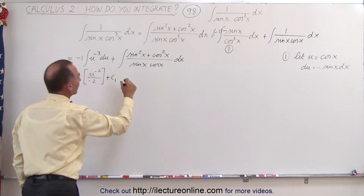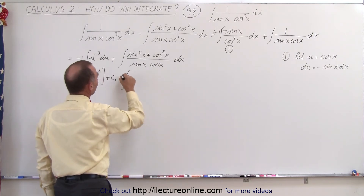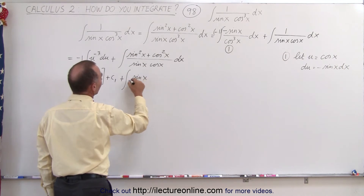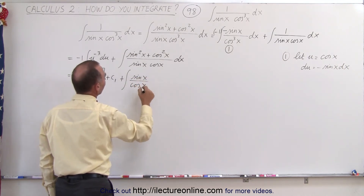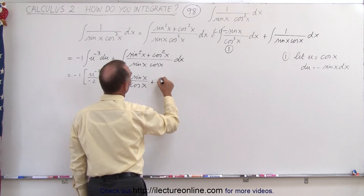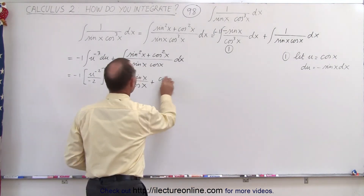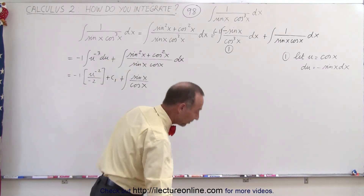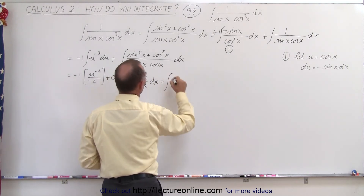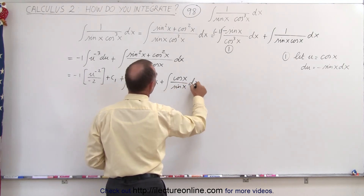The second integral becomes the sum of two integrals: the integral of sine of x divided by cosine of x dx, plus the integral of cosine of x divided by sine of x dx.